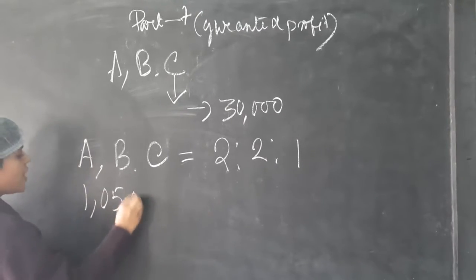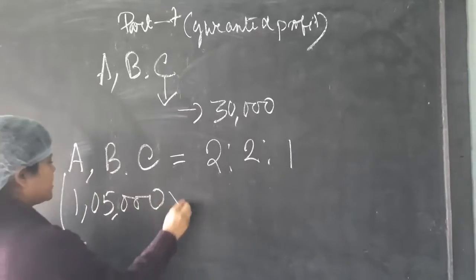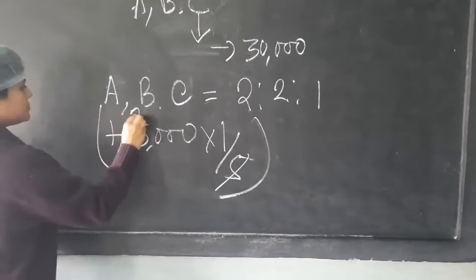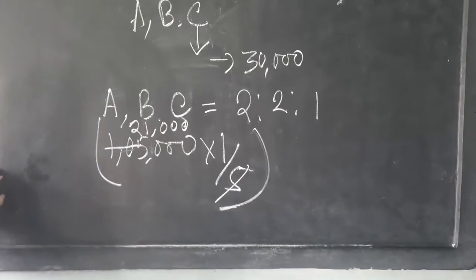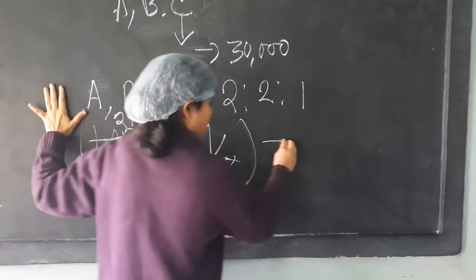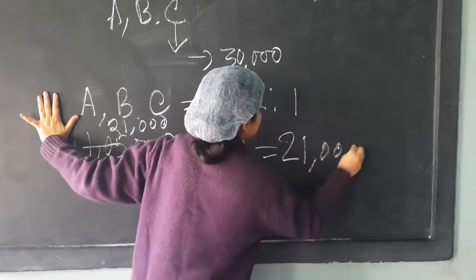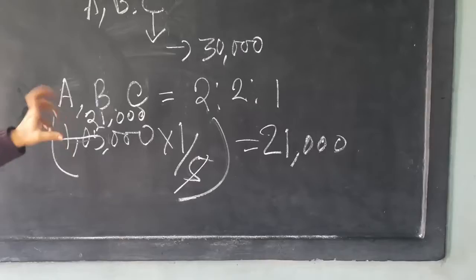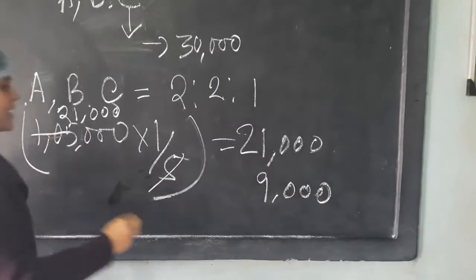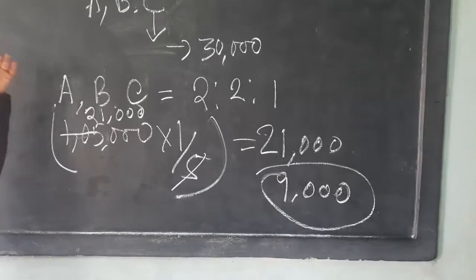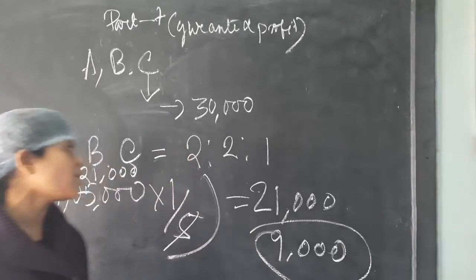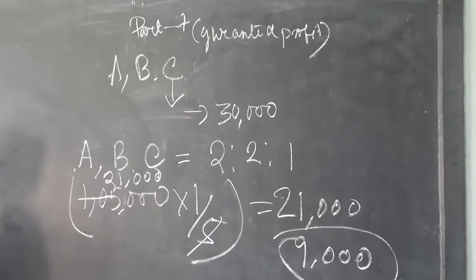Suppose the net profit is 1,000. In that case, C's share as per the profit sharing ratio would be 21,000. But that will not happen because C is the guaranteed partner. So to make it up to 30,000, this deficiency of 9,000 will be adjusted from A and B. A and B will get a lesser amount of profit because they have to give the balance of 9,000 to C.